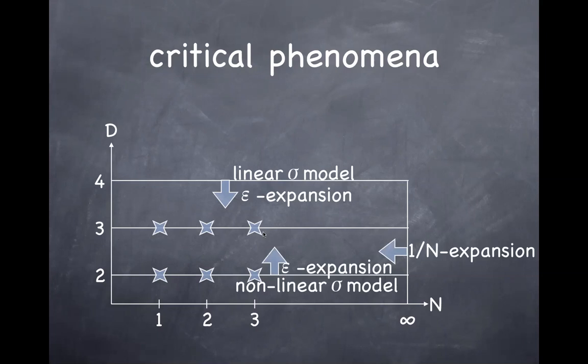The linear sigma model has O(N) symmetry with N=1, 2, 3 corresponding to physical systems, but from a QFT perspective it's fine to treat N as an arbitrary integer. In fact, when N → ∞ the system is exactly solvable — it's an interacting system with non-trivial dynamics, but the large-N limit admits a non-perturbative exact solution. We can then do a systematic expansion in 1/N away from that limit.